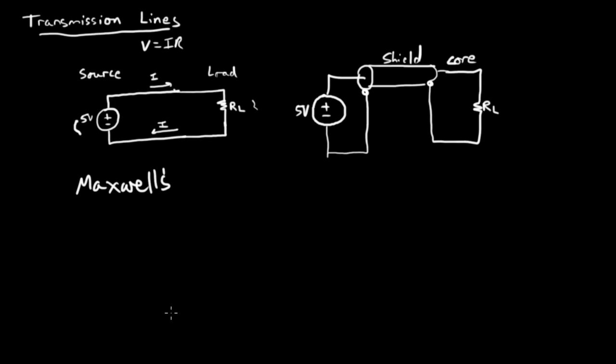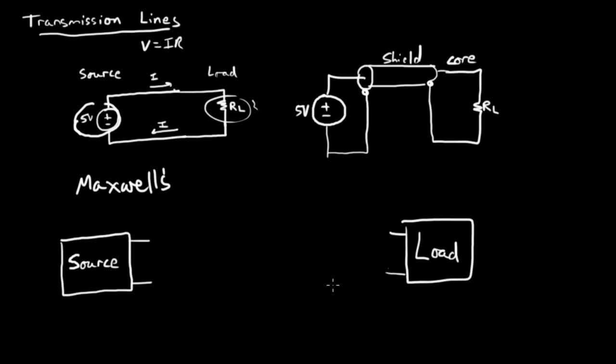I'm going to pause and draw a transmission line system based on a source and load. Here we have a source and a load, and let's imagine in between those two, so this would be the source and this would be the load, and here I've drawn it in more abstract form. Imagine between the source and the load there are many, many, many individual segments of wire, in fact an infinite number of segments of wire. And each segment of wire has some reactive or DC components associated with it.